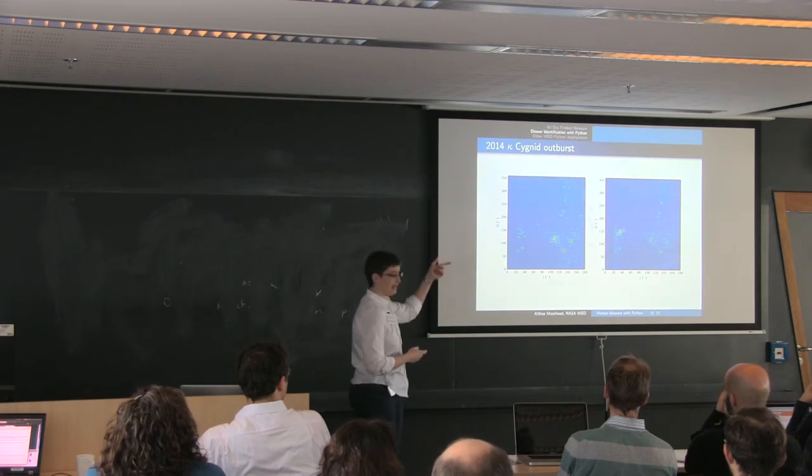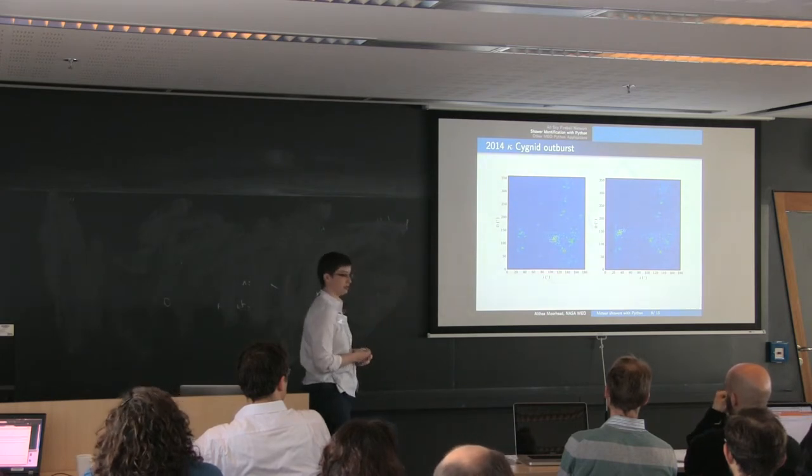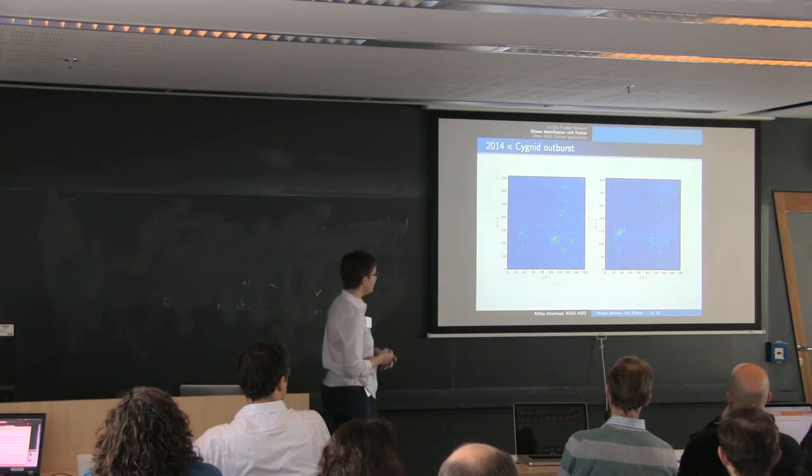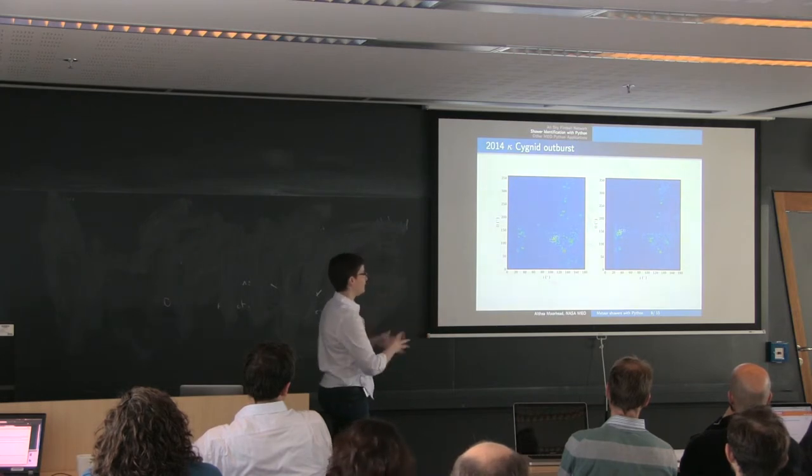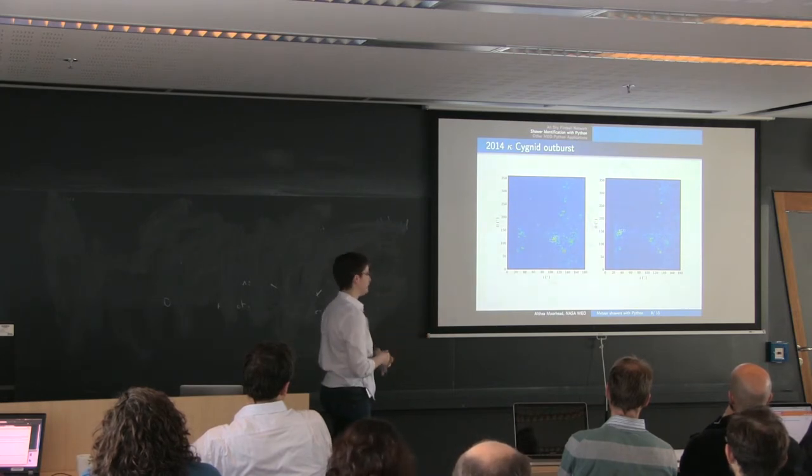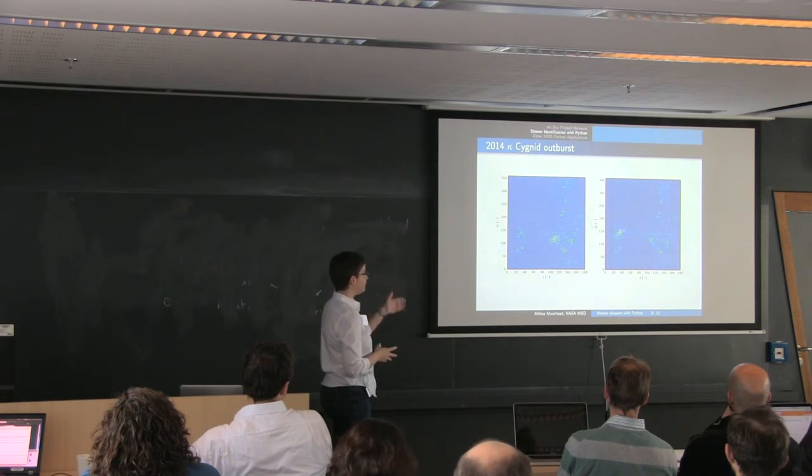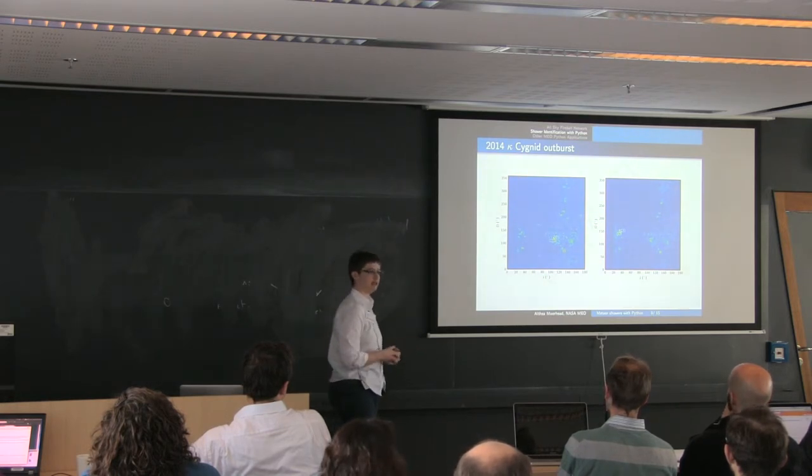So for instance, the Zeta Cassiopeids turns out to be a little more significant than we thought. And then last year we also picked up an outburst in the Kappa Cygnids. These are before and after heat maps of those orbital elements again. Here I've removed the larger shower. So we're down to about the 11th shower in the list.